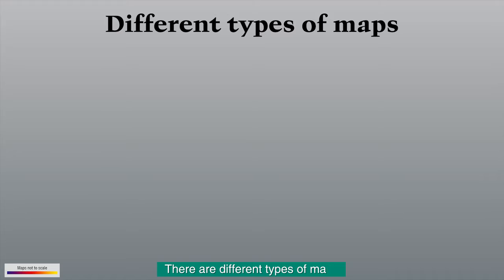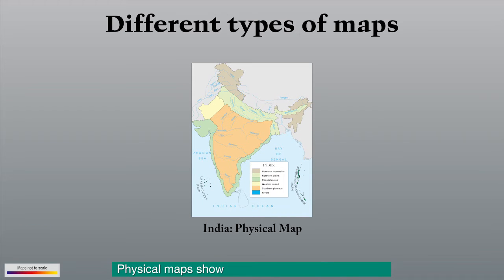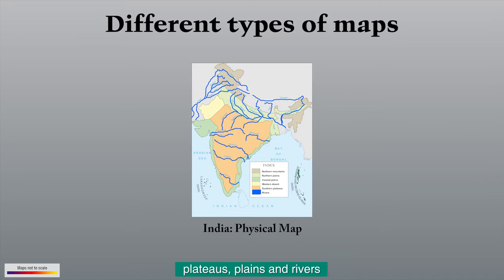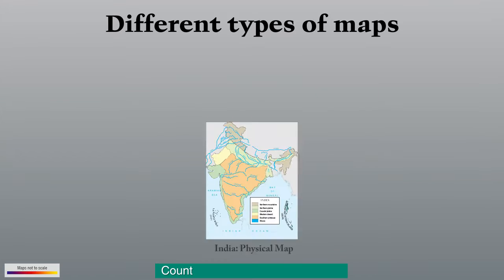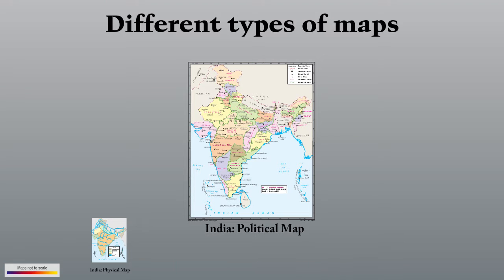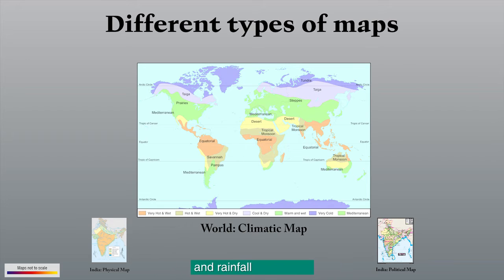There are different types of maps. Physical maps show the physical features of a place such as mountains, plateaus, plains, and rivers. Countries, states, and their capitals are shown on political maps. General information about climate and rainfall of a region is shown in climatic maps.